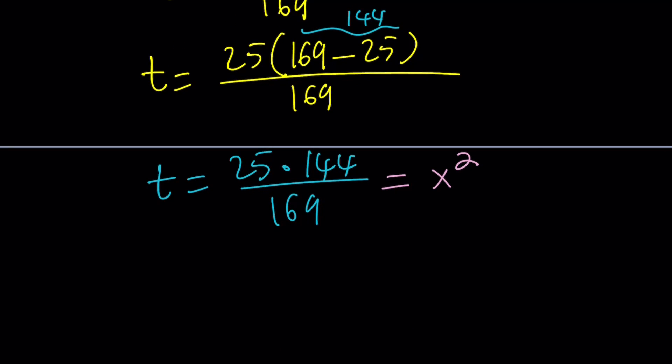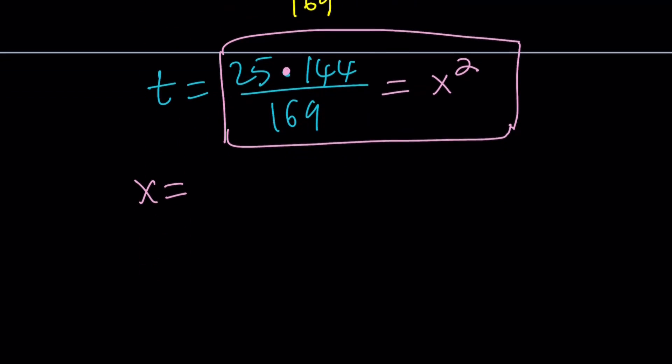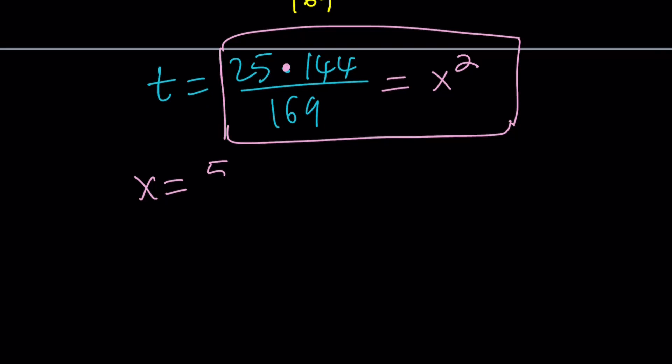Something that would help here, because these numbers are going to get larger, is to write it as a product. We can factor out a 25, because that is a common factor. And that's going to give us 169 minus 25, which is a perfect square, by the way, because that is 144. You see how helpful that is? Now if you remember, t is a perfect square. And that's just perfect.